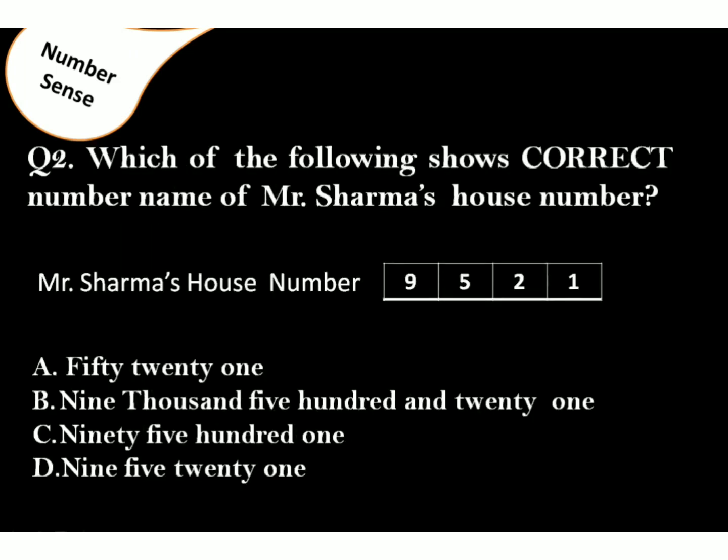Question 2. Which of the following shows the correct number name of Mr. Sharma's house number? Mr. Sharma's house number is 9521. Correct answer is Option B.